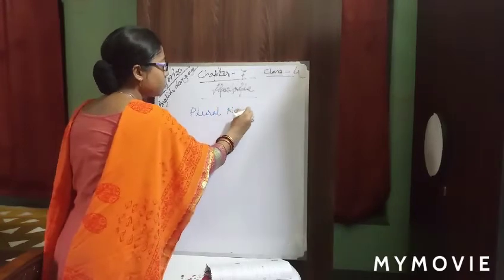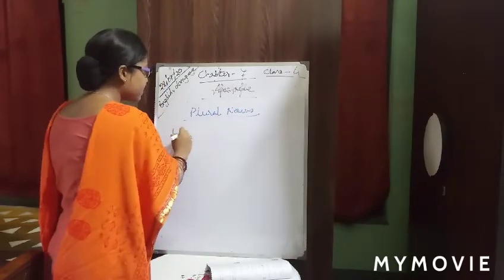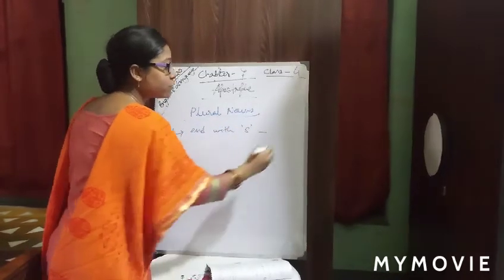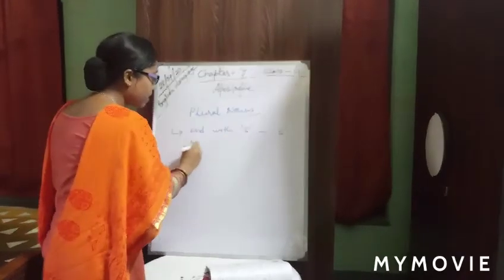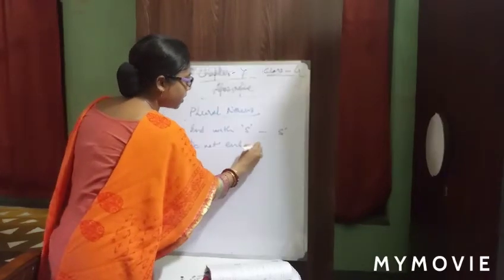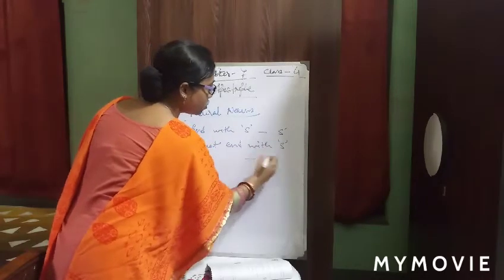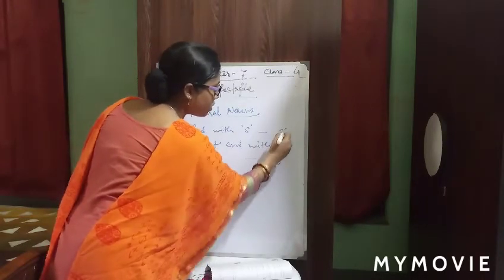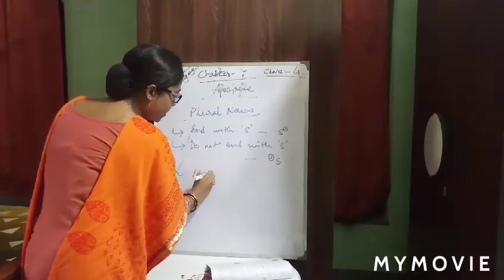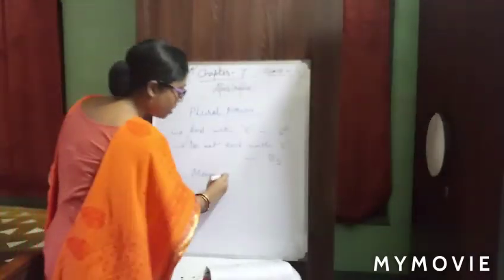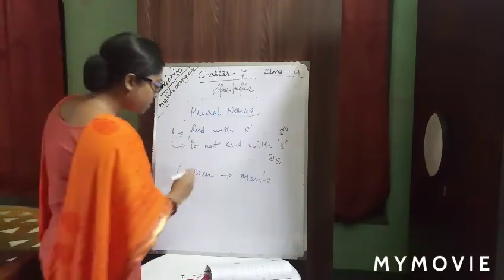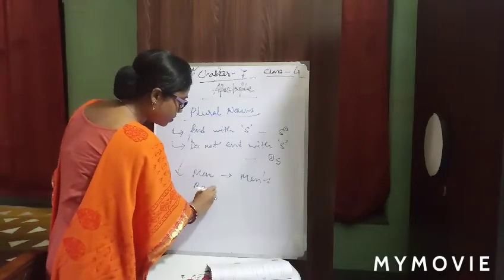What is the first rule for plural nouns? If the word ends with 's', we have to use s-apostrophe. If it does not end with 's', we have to use apostrophe then s. For example, 'men' does not end with s, so in the plural case we write 'men's'.